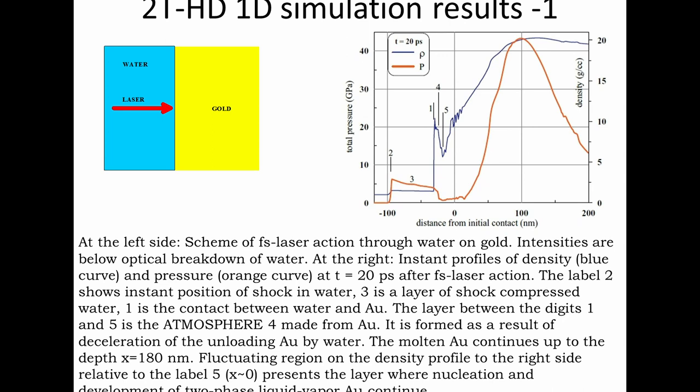We use very simple hydrodynamic one-dimensional equations to describe the unloading of gold. So gold is heated, it is unloaded into water. This is the pressure profile and density profile. This is the density jump on the gold-water surface, and it moves into water whilst it supports the shock wave in the water. This is shock in the water, this is shock compressed water, this is contact, this is rarefaction wave, and this is compression wave going into the bulk of gold.